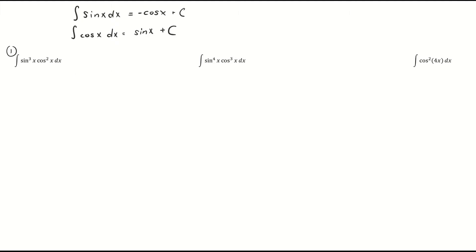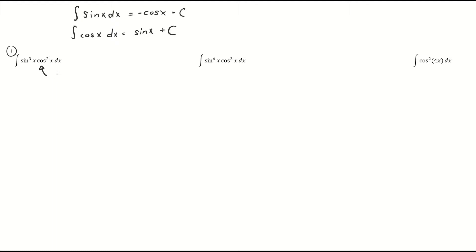The same thing happens if I let u equal sine x. Then du is cosine x dx, but I have a cosine squared, so I cannot substitute that in — I can only substitute in for a straight cosine x. This means I need to manipulate this somehow to have only a sine x dx or only a cosine x dx, so that I can let u equal the other trig function.